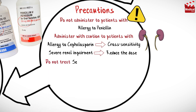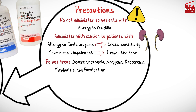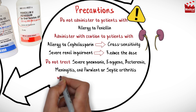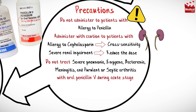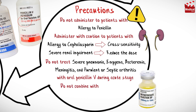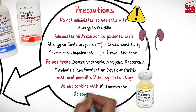Do not treat severe pneumonia, empyema, bacteremia, pericarditis, meningitis, and purulent or septic arthritis with oral penicillin V during the acute stage.